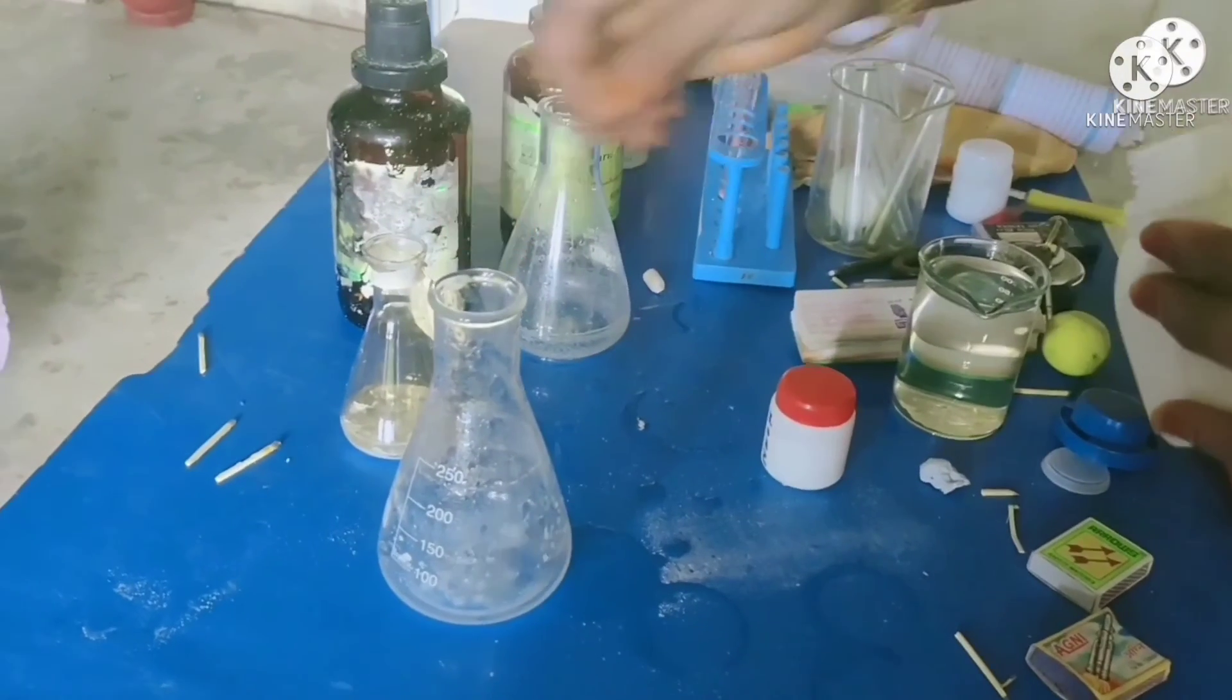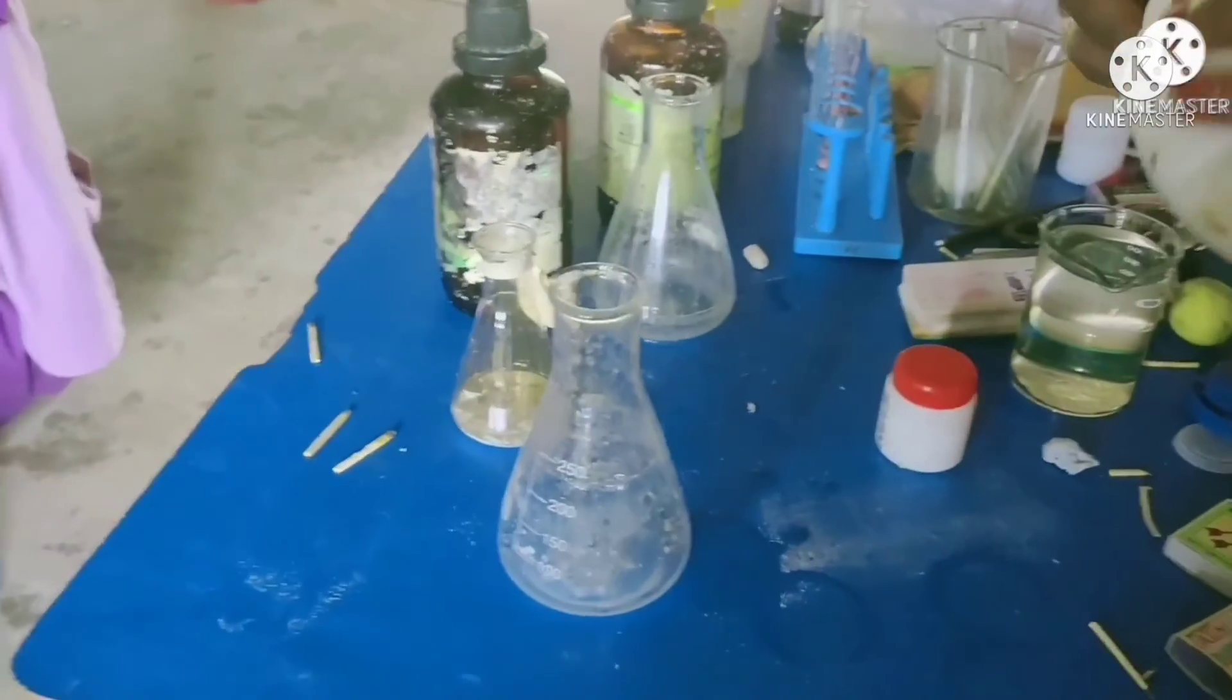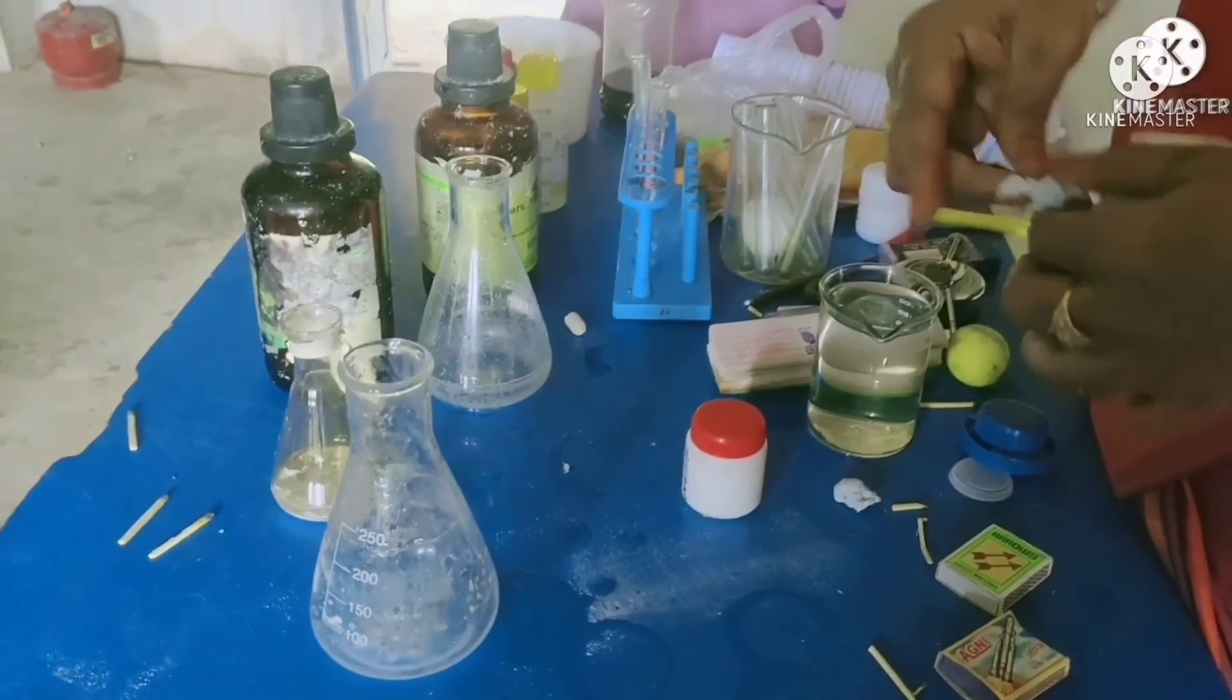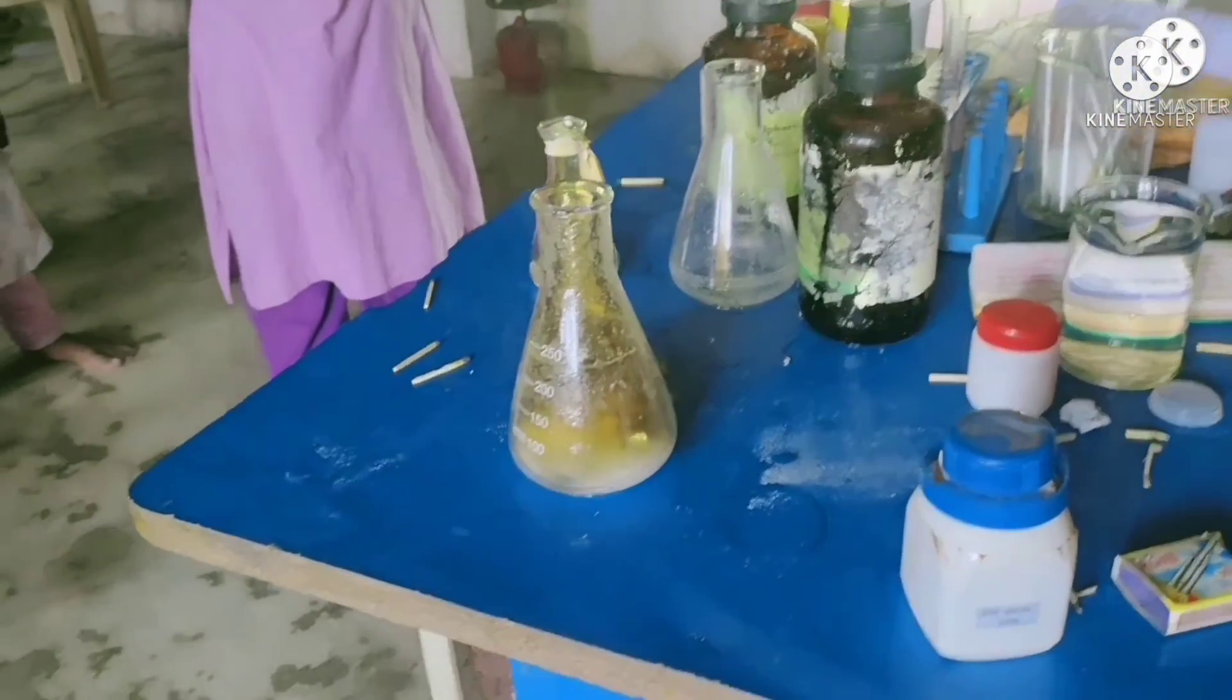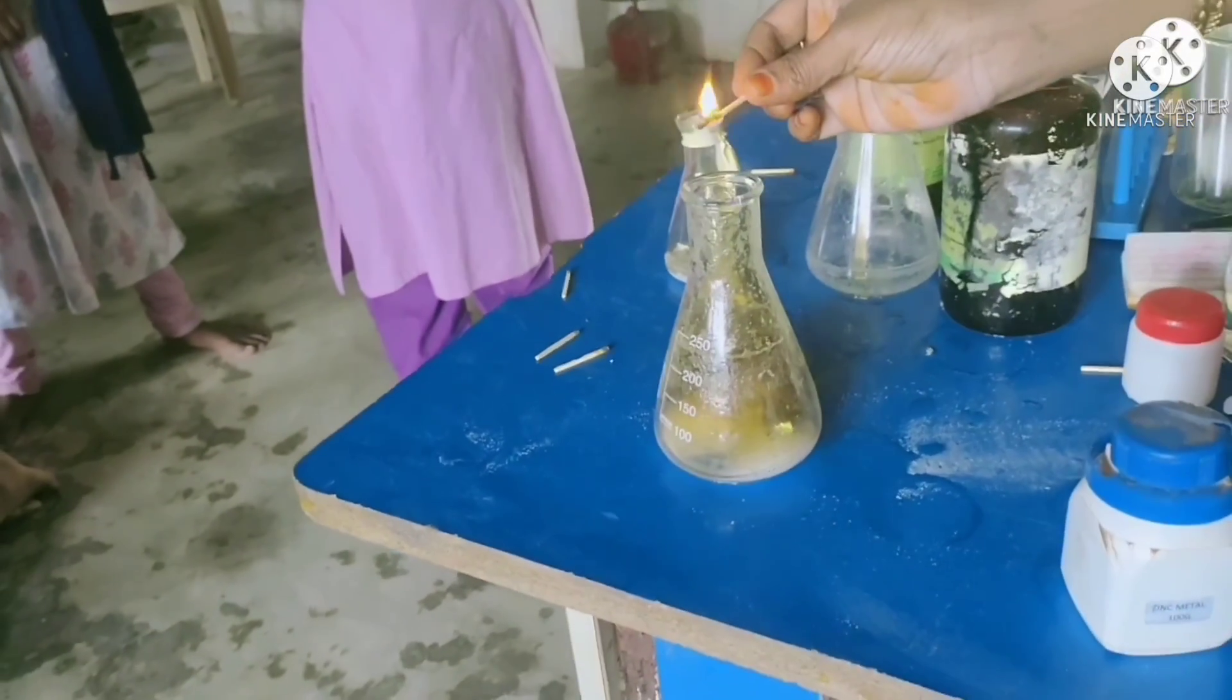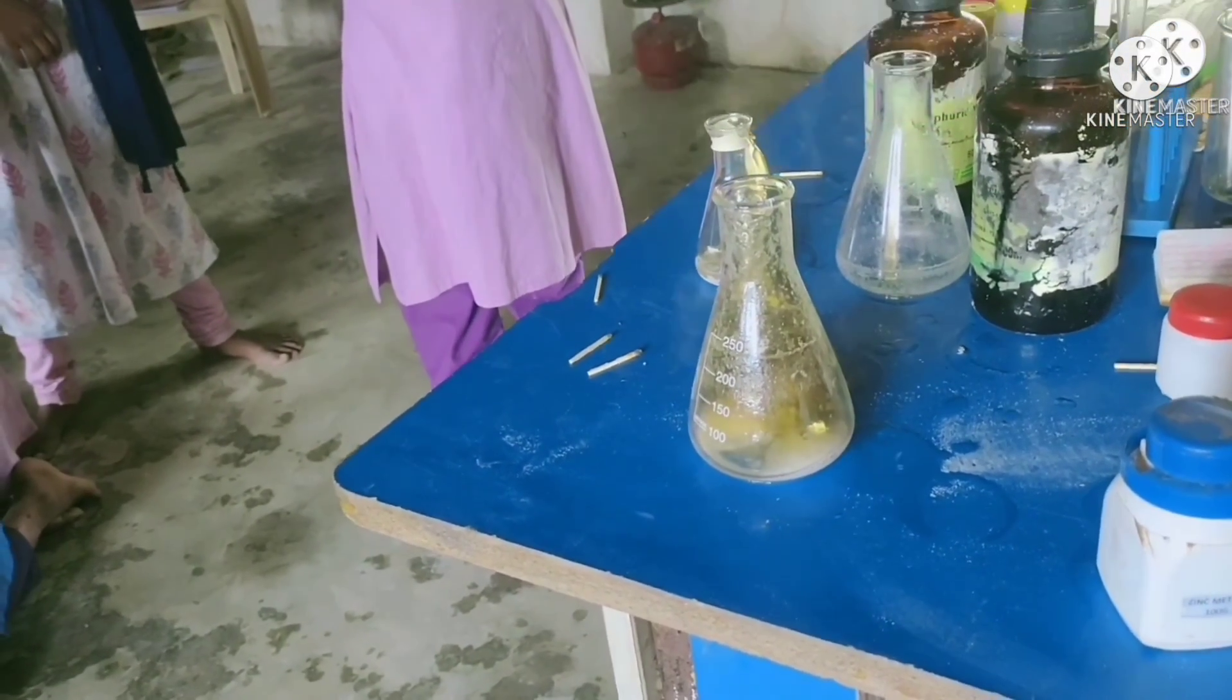Now introduce an incense stick or burning splint into the mouth of the conical flask. The flame of the burning stick will put off with a pop sound. This is the test for hydrogen gas.